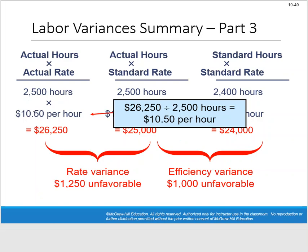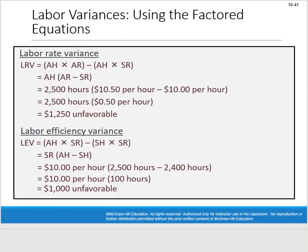Backing into $10.50 per hour by dividing $26,250 by 2,500 hours is optional but useful — it shows the rate exceeded the $10 standard. The book again shows the equation method with different letters as if it's something new, but it's the same approach. I encourage you to keep using the three-prong approach. If you want to memorize equations, don't let me stop you.